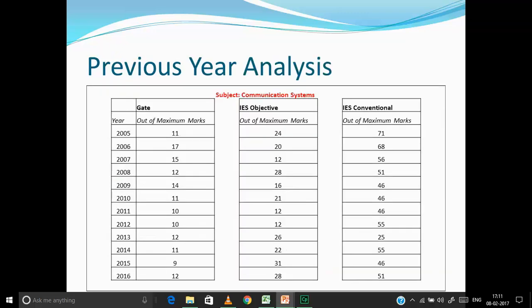Looking at the previous year analysis, in GATE almost every year around 10 to 15 marks are asked from communication systems — that's 10 to 15 percent of a 100-mark exam, which is significant. For IES objective it's around 20 to 25 marks, sometimes more. For IES conventional, more than 50 to around 70 marks are asked each year, so a good understanding of theory and concepts is essential.